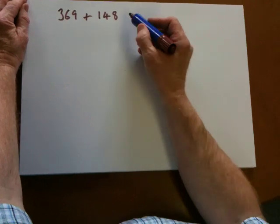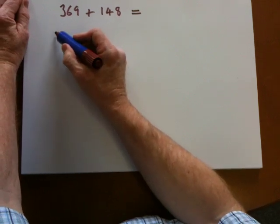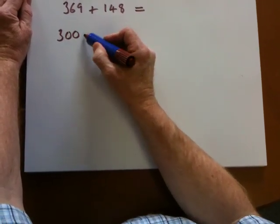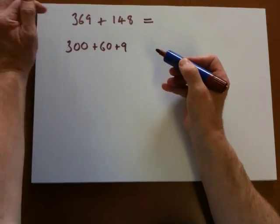So they may be told to split each number up. To say, well, 369 is 300 add 60 add 9. So we've partitioned that one.